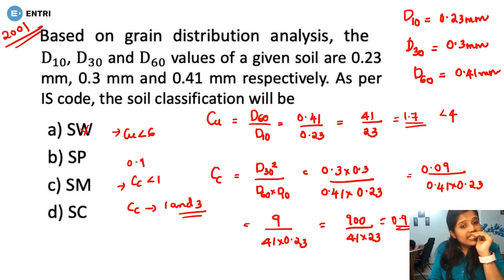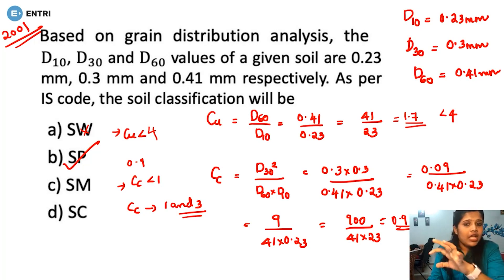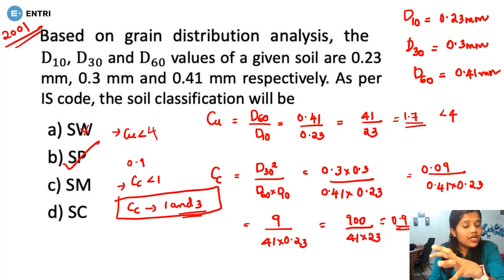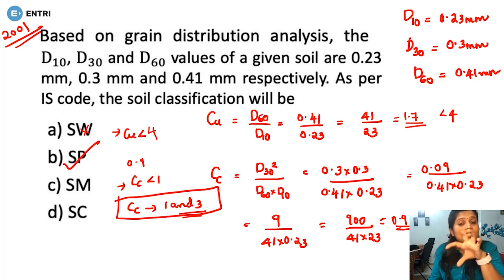Cu is less than 6 and Cc is less than 1, so the soil is not well-graded — it is poorly graded. Since the grain sizes indicate sand, the classification is SP: poorly graded sand. Option B is the correct answer. We use Cu and Cc values together to determine well-graded or poorly graded status per IS code.